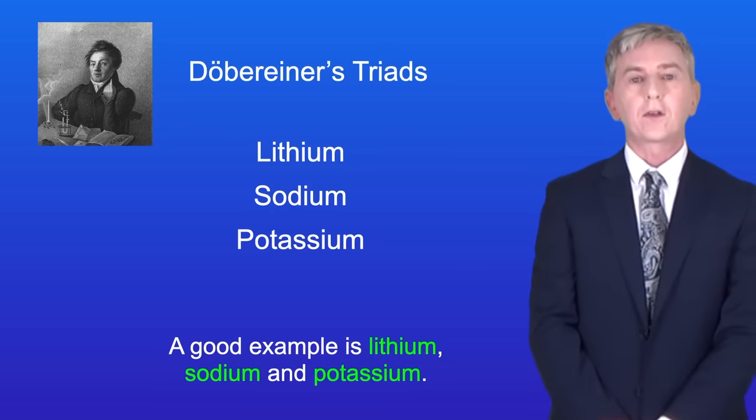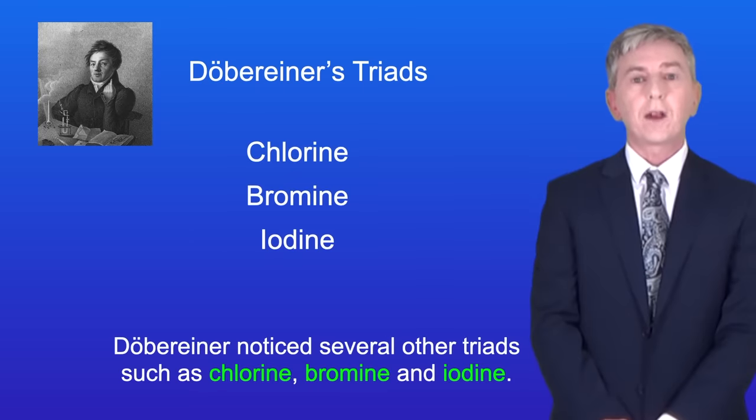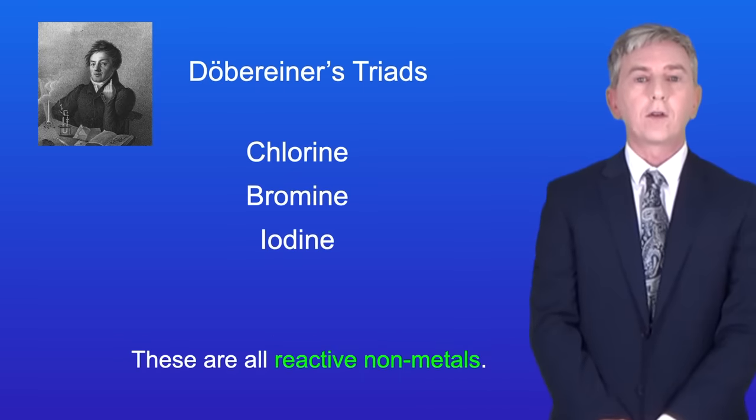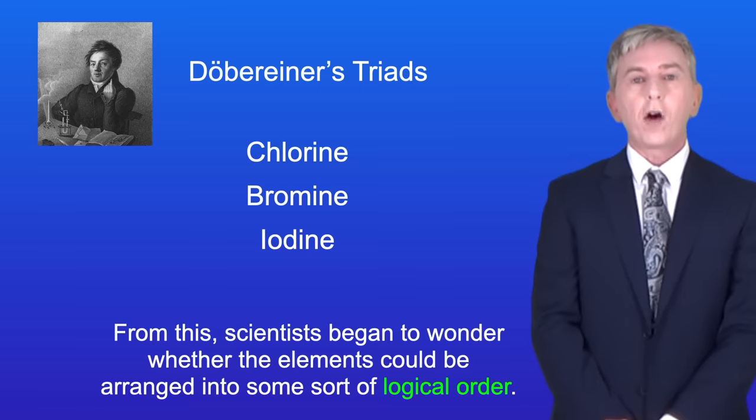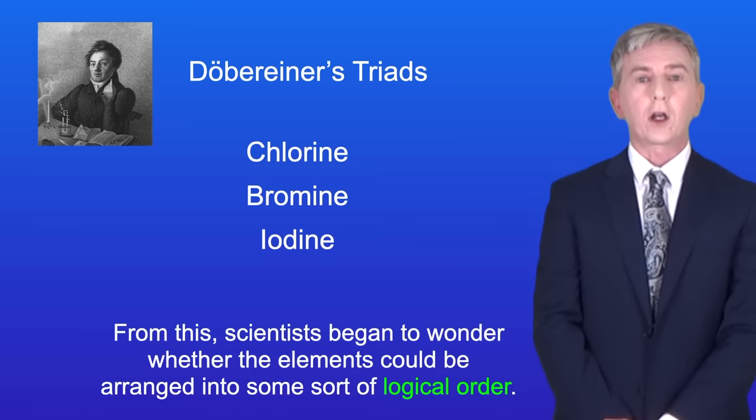A good example is lithium, sodium, and potassium. These three metals all react rapidly with water. Döbereiner noticed several other triads such as chlorine, bromine, and iodine. These are all reactive non-metals. So from this, scientists began to wonder whether the elements could be arranged into some sort of logical order.